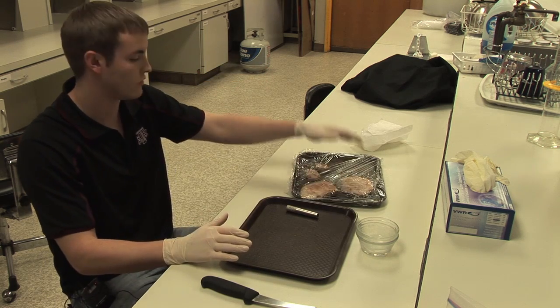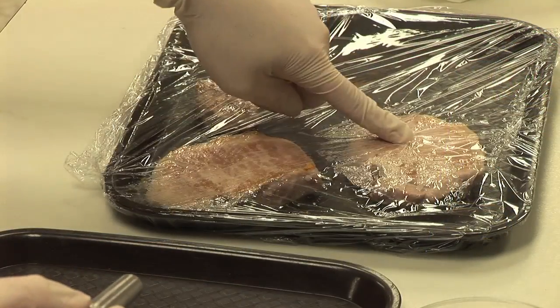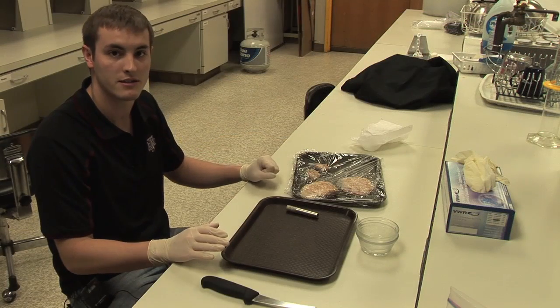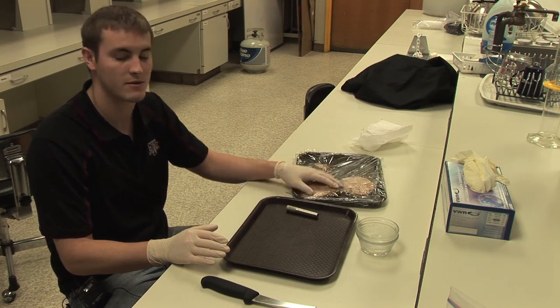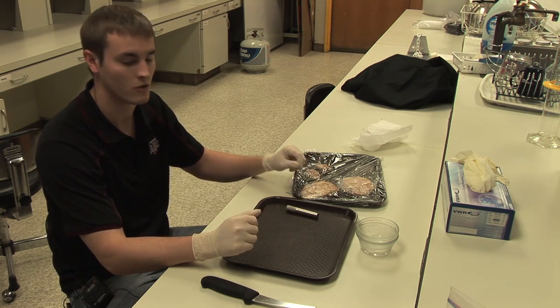We have here pork loins and pork tenderloins. They were cooked earlier this morning to a specific degree of doneness. They were put in the cooler so they'd all be the same temperature when we do the cores. This is important because it helps with consistency whenever running the cores and it helps you get a cleaner core at the end.